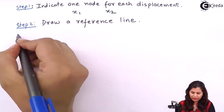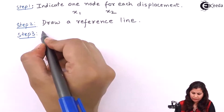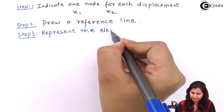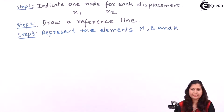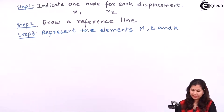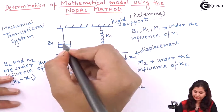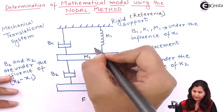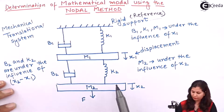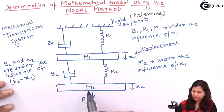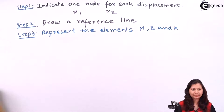In Step 3, represent the elements M, B, and K as they are present in the system. Here we have M1, which is connected between node X1 and the reference line. B1 and K1 are also connected in parallel at node X1. Between X1 and X2, we connect B2 and K2 in parallel combination. Between X2 and the reference line, we have mass M2 and the external force F.